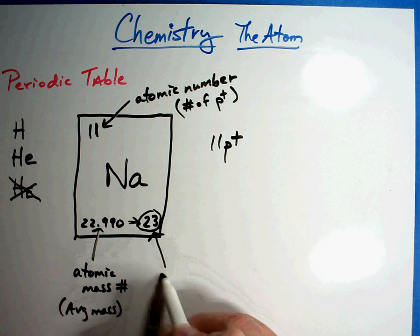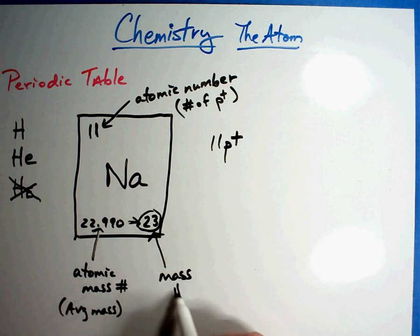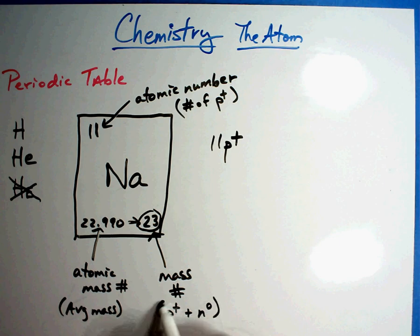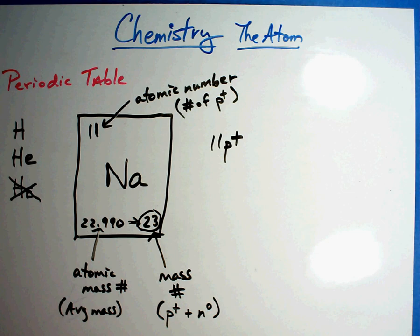That is called the mass number. Now these words are so close, you got to be careful with them. The mass number. It's protons plus neutrons added together in the atom. So by definition the mass number is the number of protons and neutrons added together. Now why would that be true?